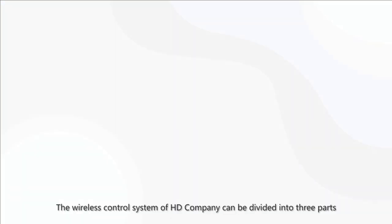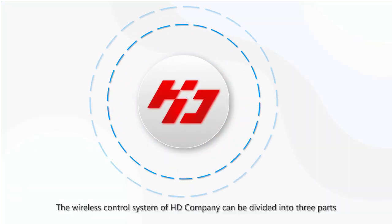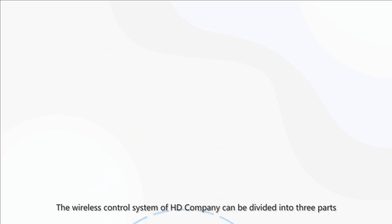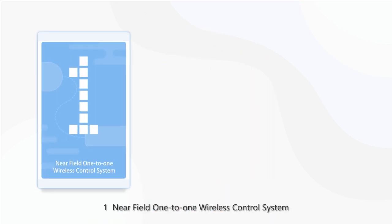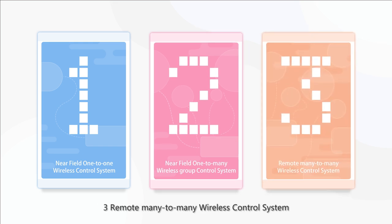The wireless control system of HD Company can be divided into three parts: 1. Near Field 1-to-1 Wireless Control System, 2. Near Field 1-to-Many Wireless Group Control System, 3. Remote Many-to-Many Wireless Control System.